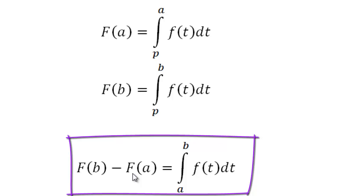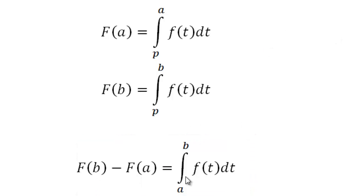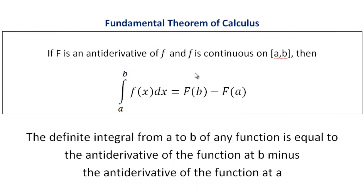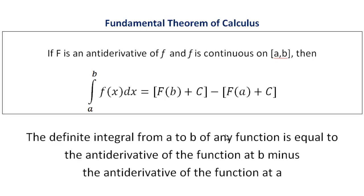Capital F is the antiderivative of the function. This links the derivative — little f of t dt — to the antiderivative in a very powerful way through the definite integral. This is the first fundamental theorem of calculus, which also describes how we compute definite integrals. You might ask: what about the constant of integration? After all, there are infinitely many antiderivatives.